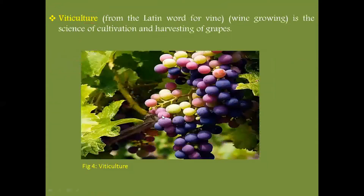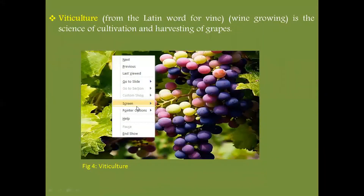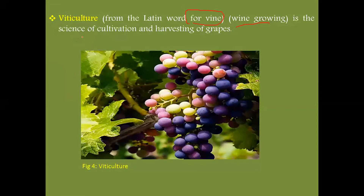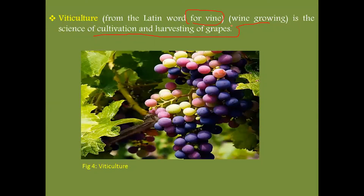Next is viticulture. Viticulture comes from Latin words used for wine, and it is also known as wine growing. It is the branch of horticulture in which the cultivation and harvesting of grapes occurs. In the figure, grapes are shown, illustrating what is studied in viticulture.